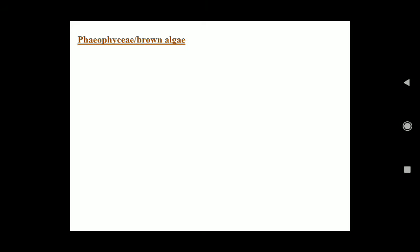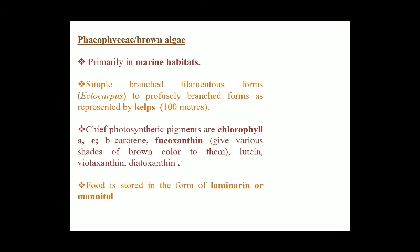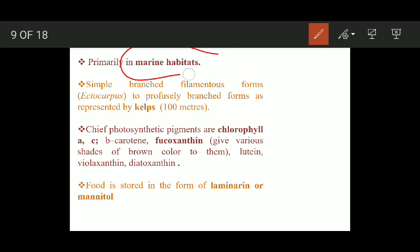The second group of algae is Phaeophyceae or brown algae. They are primarily found in marine habitats. Their body form may range from simple branched filamentous forms to profusely branched forms, as seen in the case of kelps.